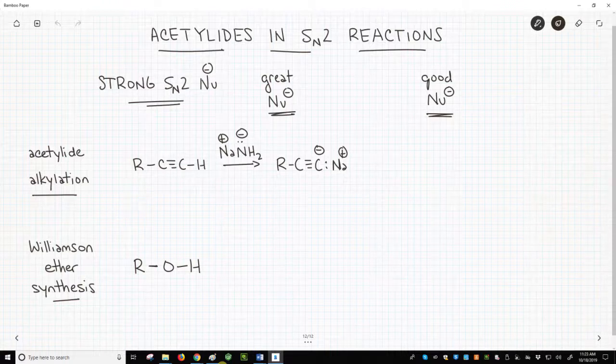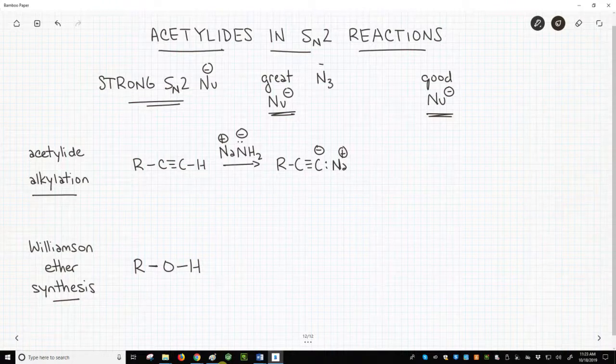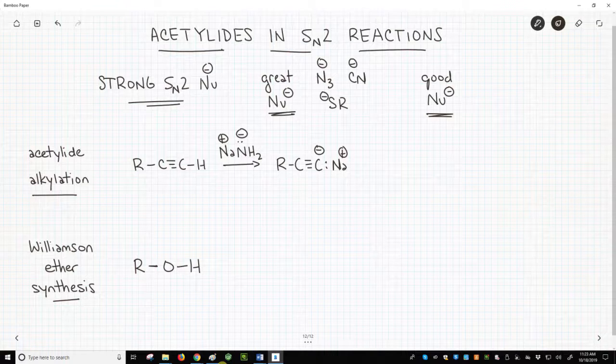I tend to divide SN2 nucleophiles into two categories. The great nucleophiles, like azide anion and cyanide and sulfides, often called thiolates, all can do SN2 reactions on primary or secondary halides.